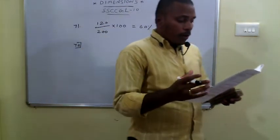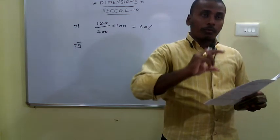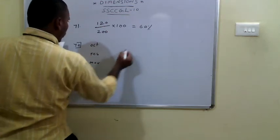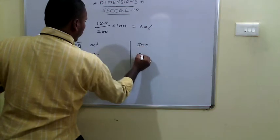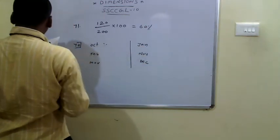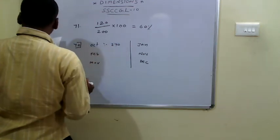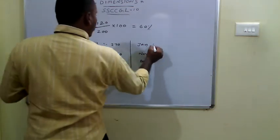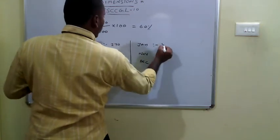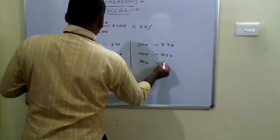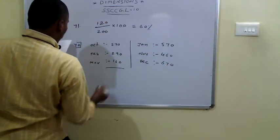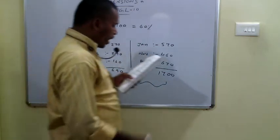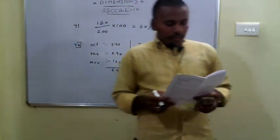The 72nd problem: calculate the difference in total shirts sold in both shops between two groups of months. Group 1 (October, February, March): 270 + 290 + 130 = 690. Group 2 (January, November, December): 570 + 460 + 670 = 1700. The difference is 1700 − 690 = 1010, which is option D.